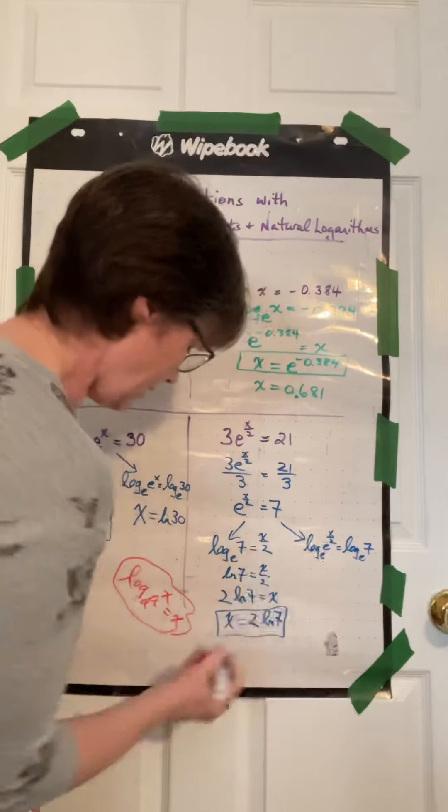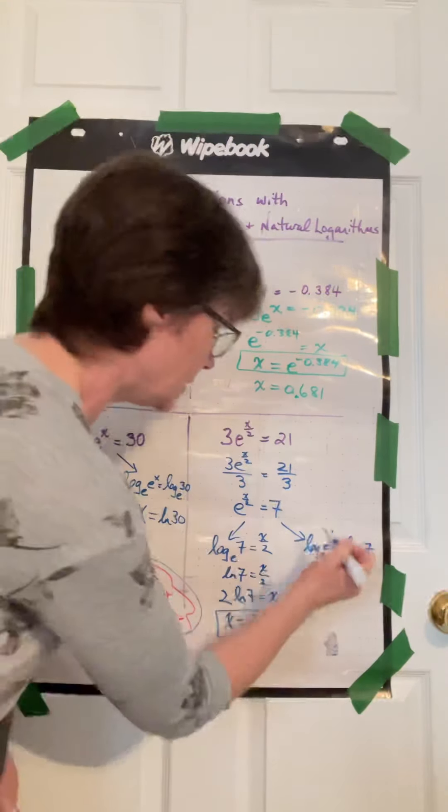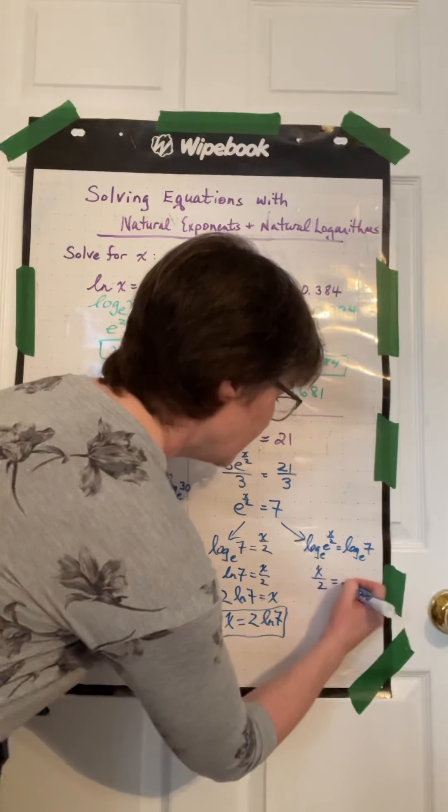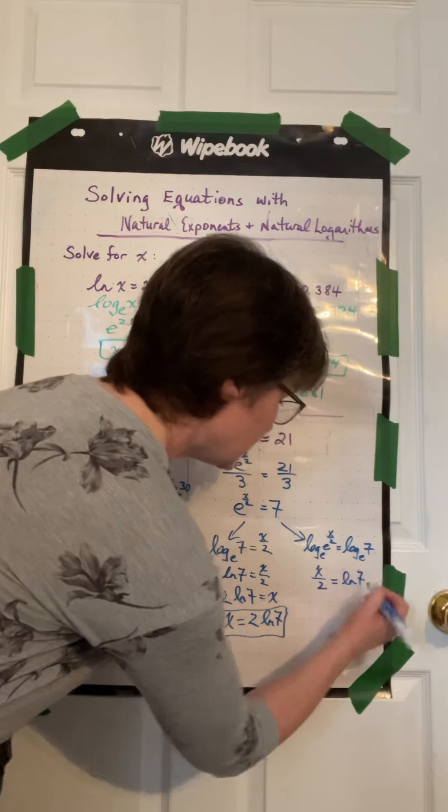So then, again, using this rule, this whole left-hand side of the equation equals x over 2. Proper way to write this side is ln 7.